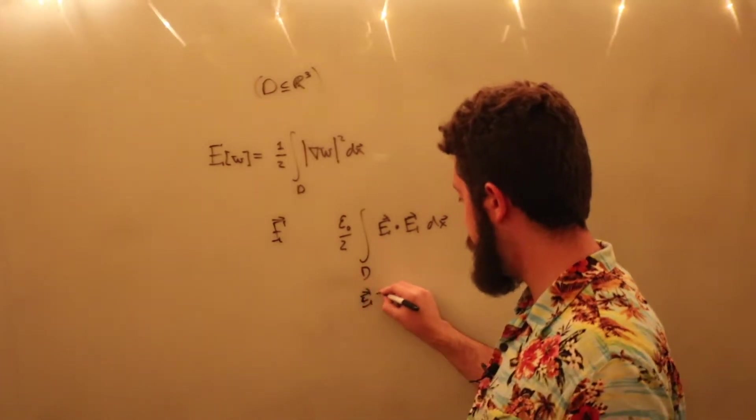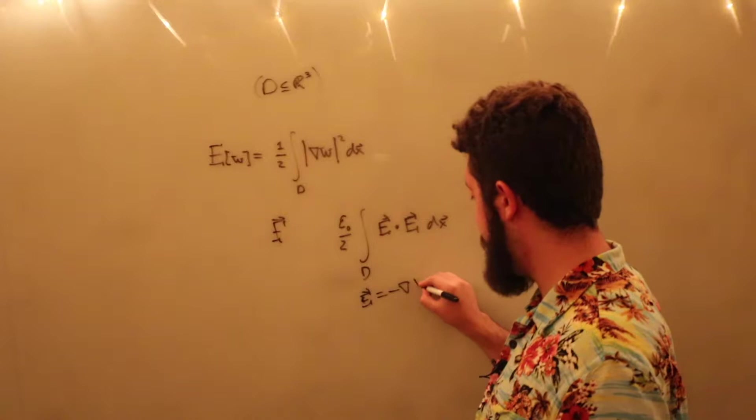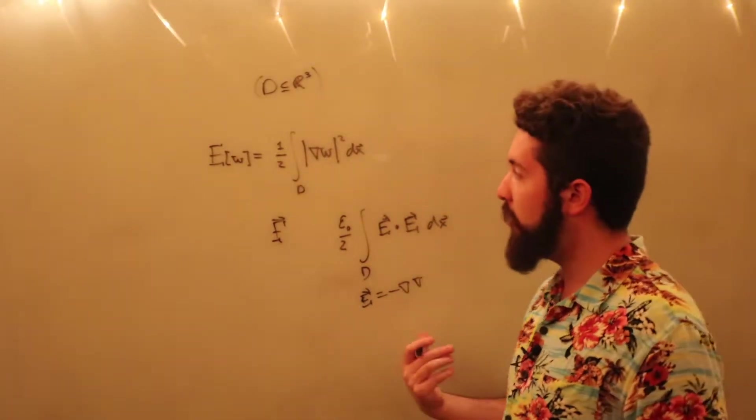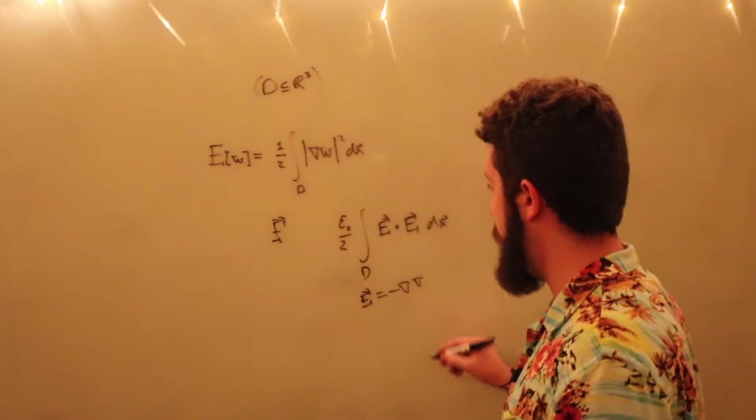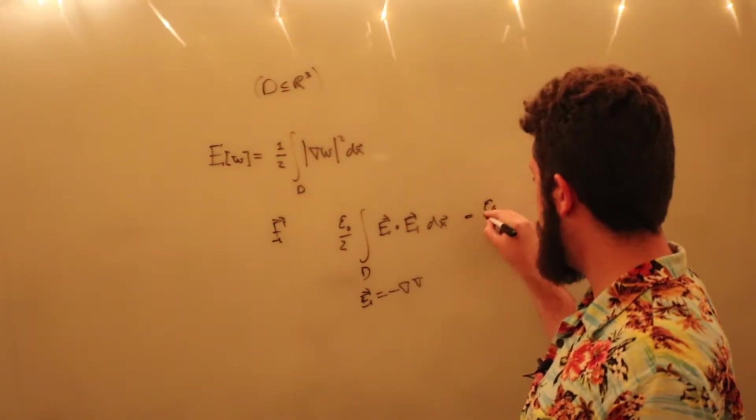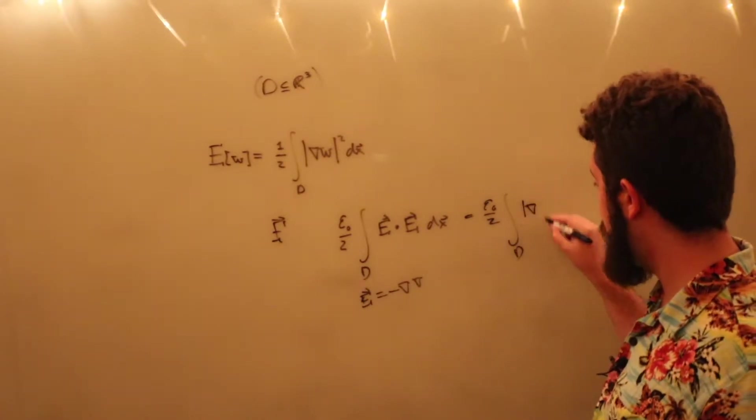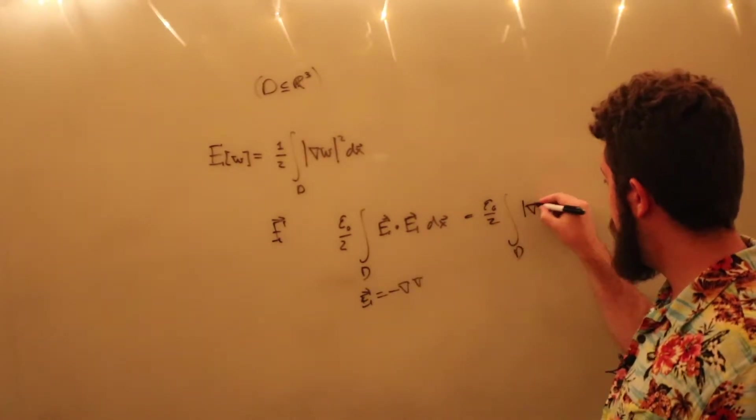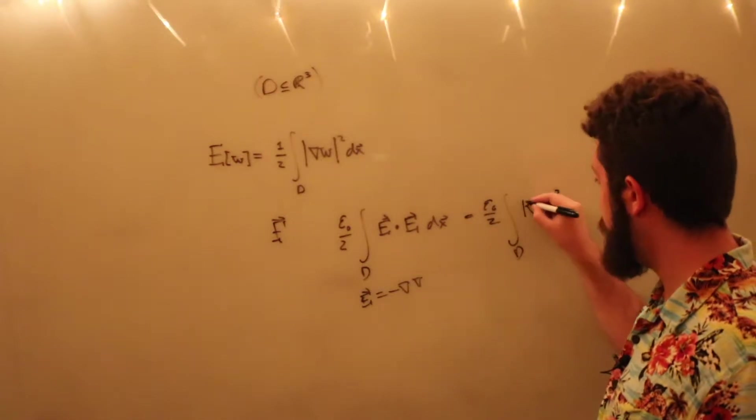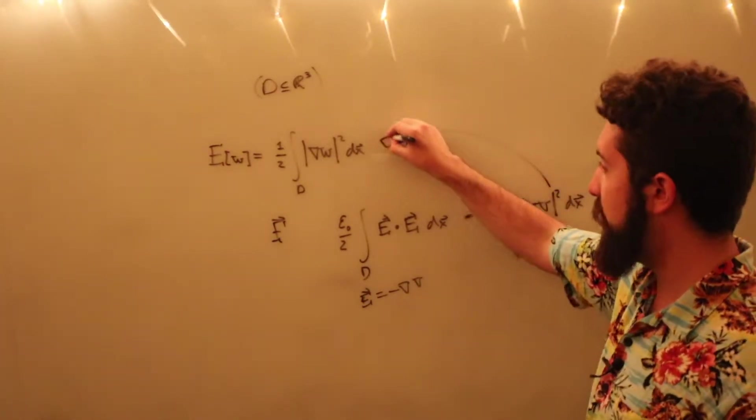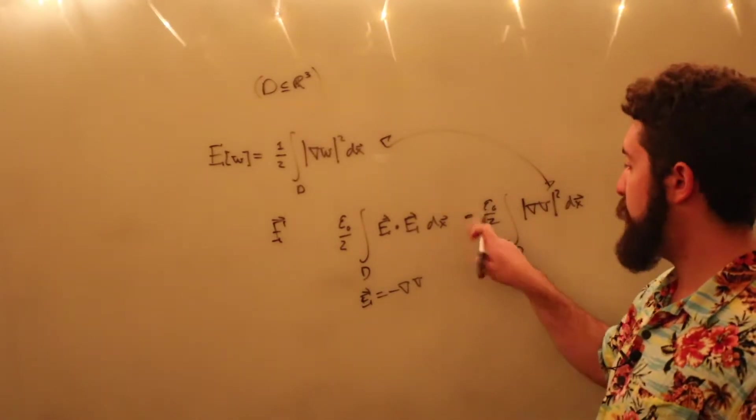Now, because the electric field is equal to the negative gradient of the electric potential, one way we can write this is as epsilon-naught over 2 integral over some region of the gradient, the negatives cancel out, of the electric potential magnitude squared. And you see that these are essentially the same thing, minus this constant.